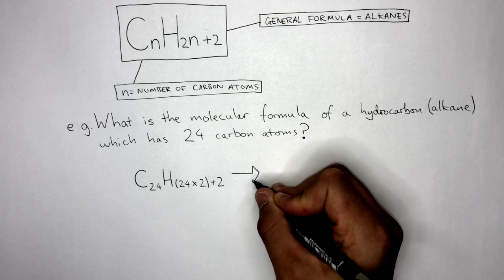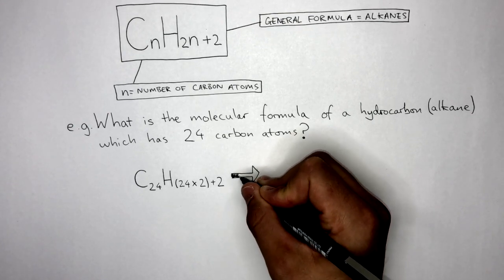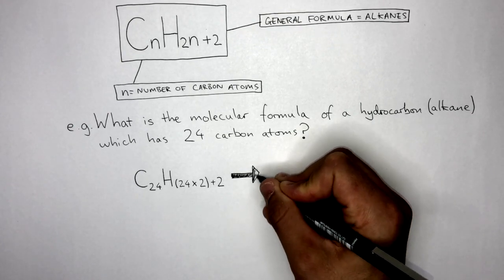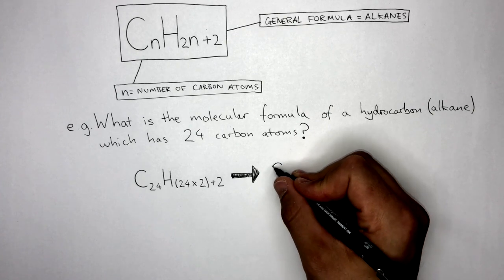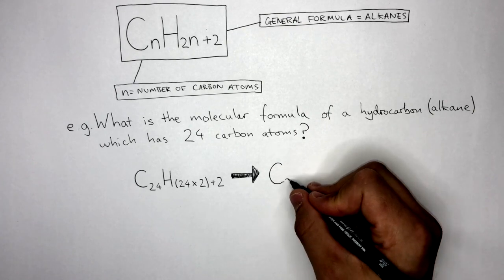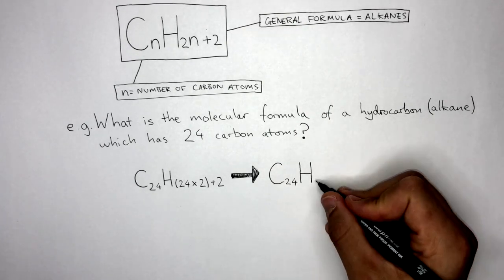This means there are 24 carbon atoms and 50 hydrogen atoms in this alkane. Therefore, the molecular formula is C24H50.